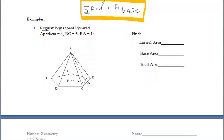For the first example, this is a regular pentagonal pyramid, so we use our derived formula: lateral area equals one half times the perimeter of the base times the slant height, since all triangular lateral faces are congruent. We're given that the apothem is 4, that BC is 6, and that the slant height is 14. We'll substitute the given information and solve.